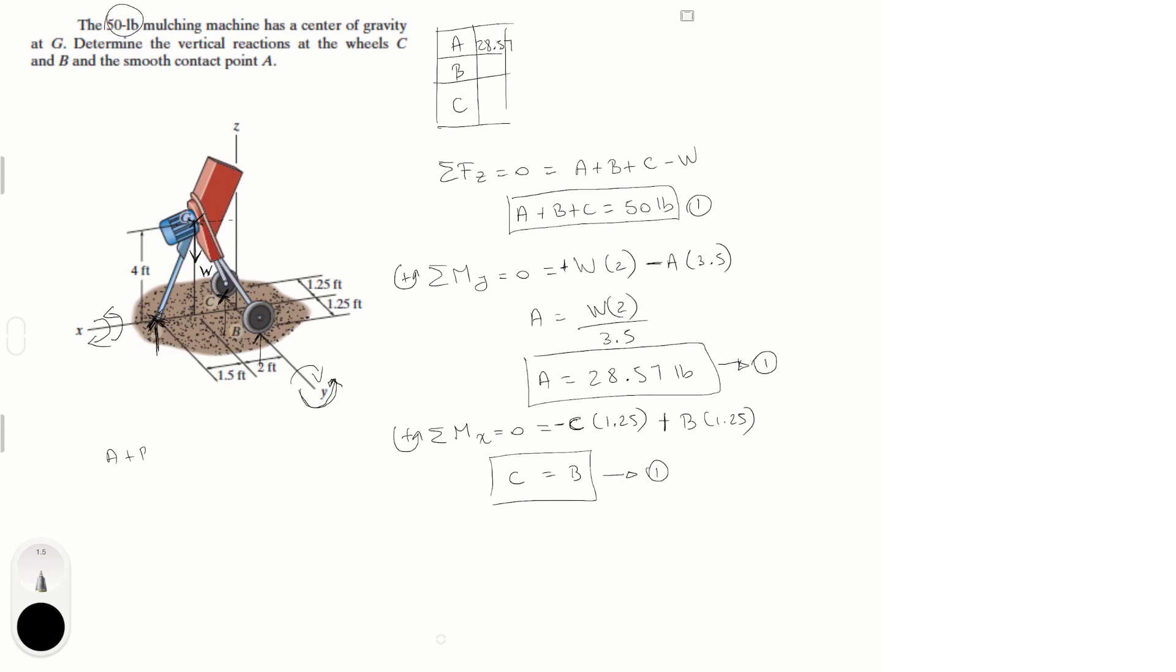We get A plus B plus C is equal to 50 pounds, right? But we know A, so we know that B plus C is equal to 21.43 pounds, right? All we did is plug in what we know for A and then solve for B and C.